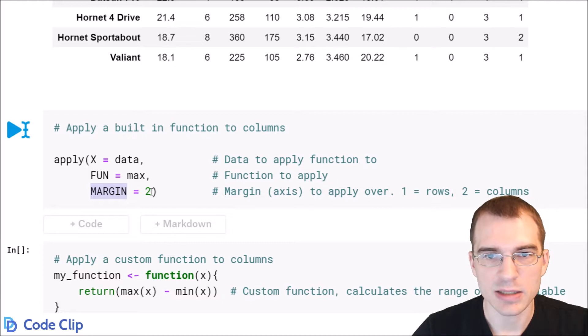The first axis or first margin is the rows. So if you wanted to apply over rows you'd do 1. But since we're applying over the columns we're passing in 2 for the margin here.